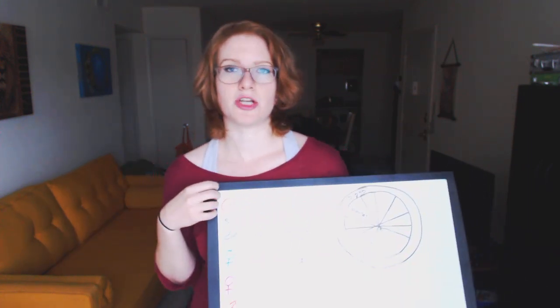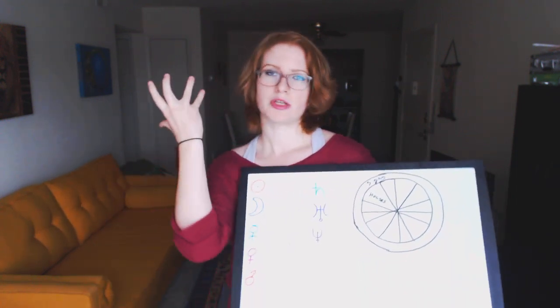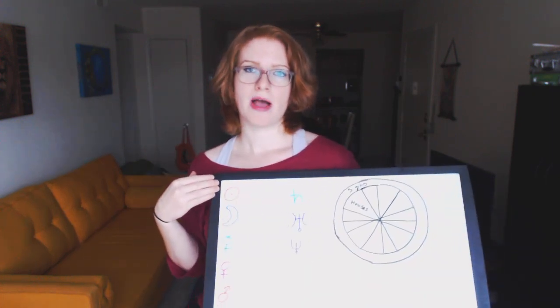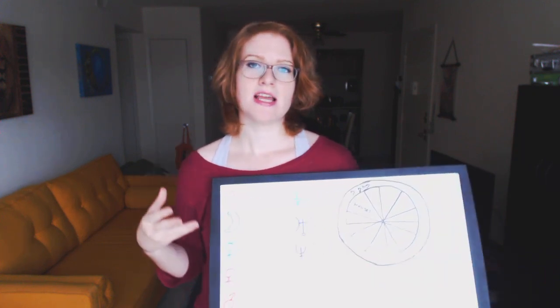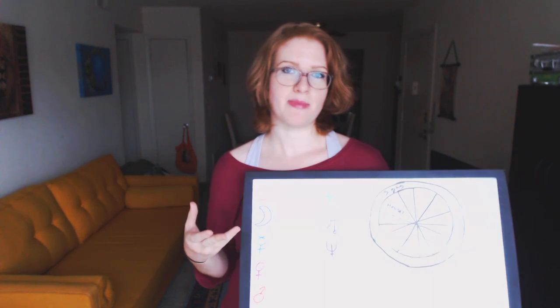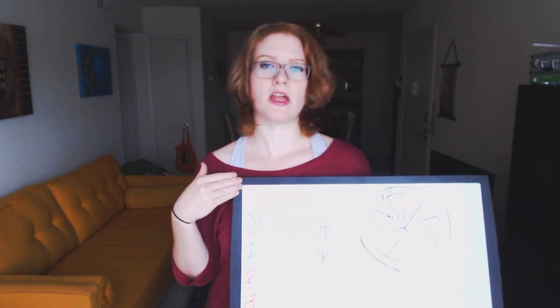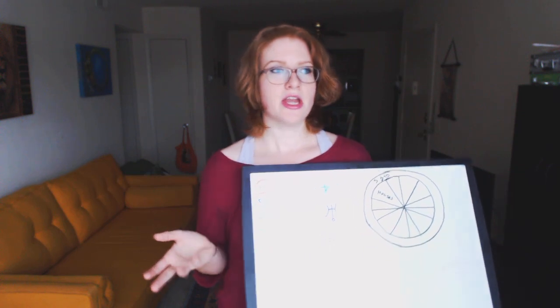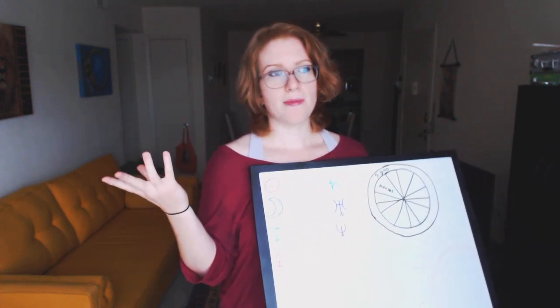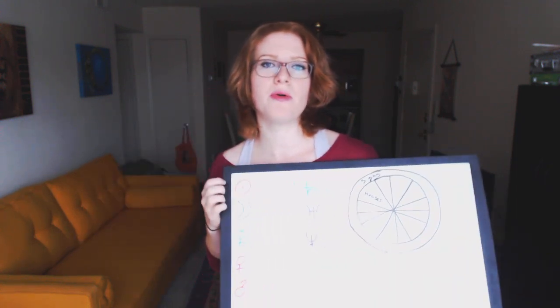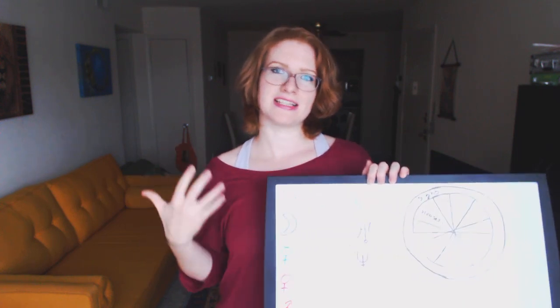The sun sign in the composite chart is going to show not just the personality, but more so the expression of the relationship. It's going to tell you about hobbies and activities that you and your partner participate in — something that's really your focus. For example, if your composite sun was in Leo, that would mean you like to do very Leo things together: you like to be dramatic, you like to be creative, you like to go out almost like you're on a stage performing for other people, with all of that Leo energy.